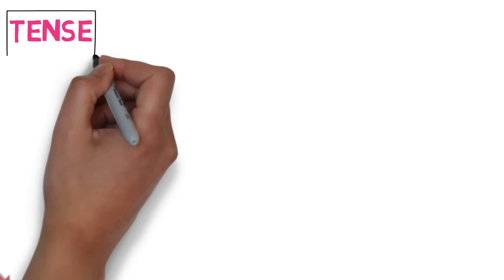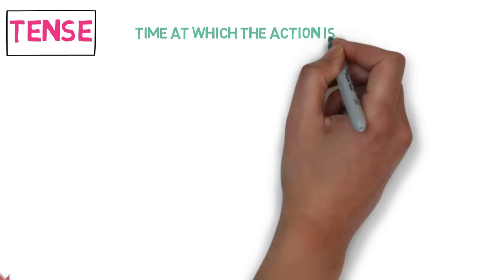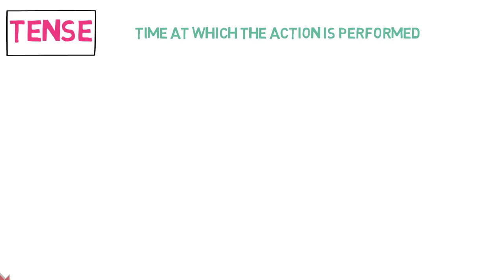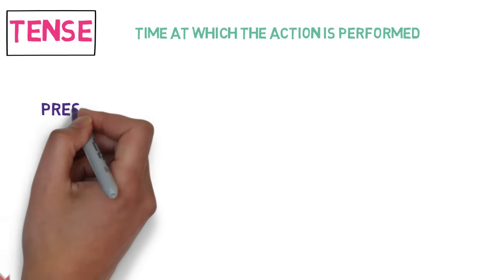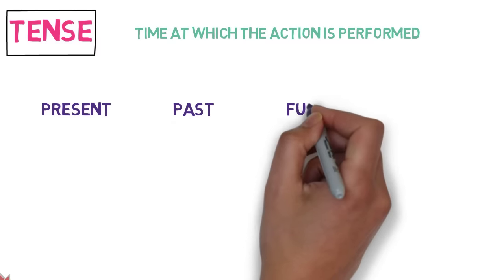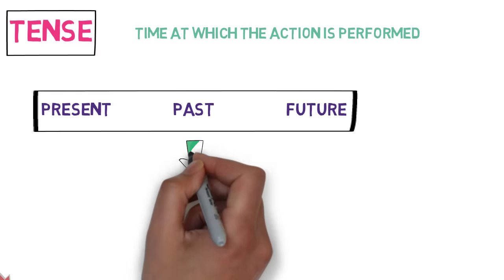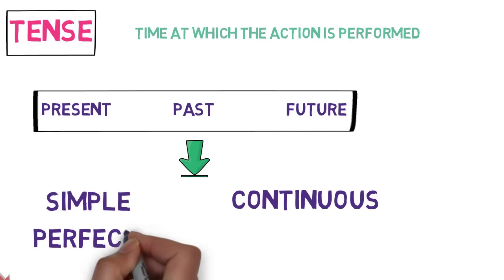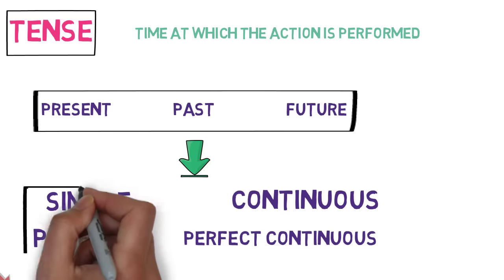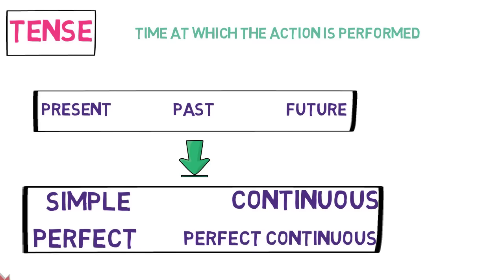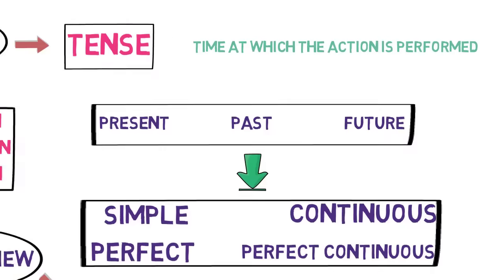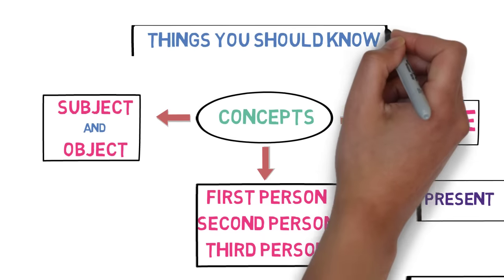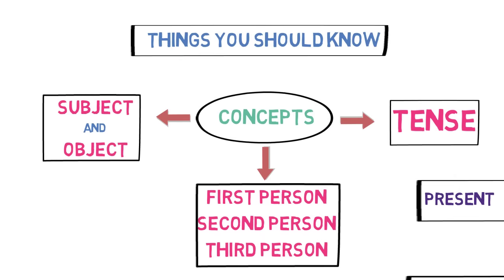Now let's look into tenses. Tense denotes at which time the action is performed. Tenses are mainly divided into three types: present, past, and future. And they are subdivided into four subtypes: simple, continuous, perfect, and perfect continuous. So in total, there are 12 tenses. If you want to recall or learn tenses, links are provided in the description. So these are the three main things that you must know.